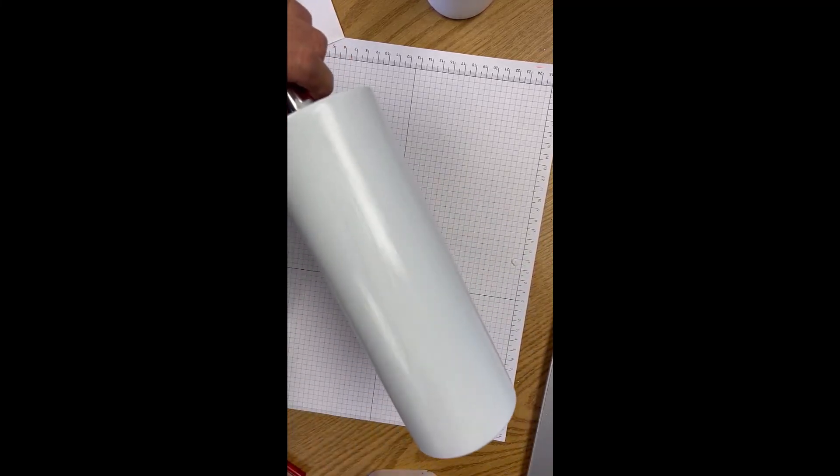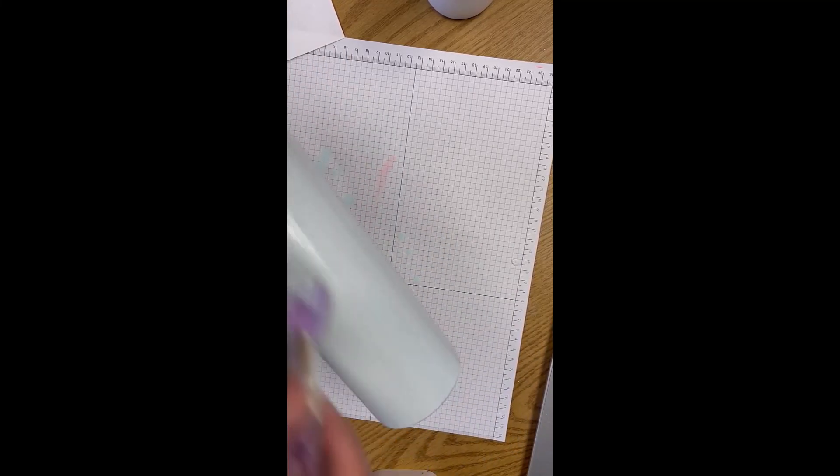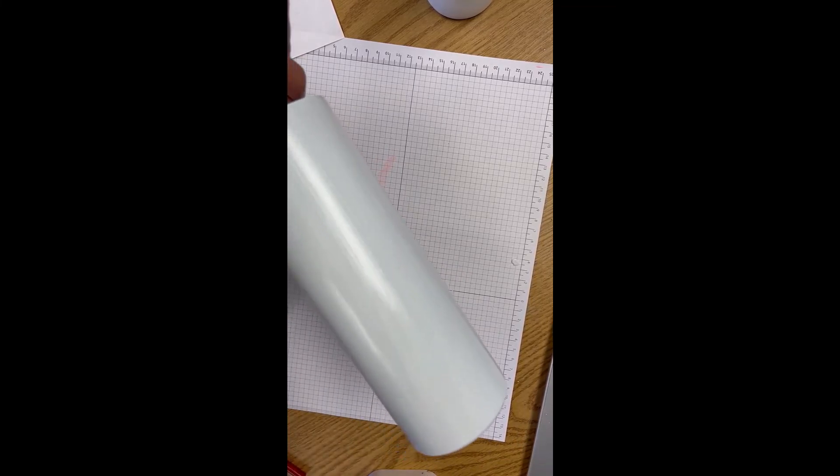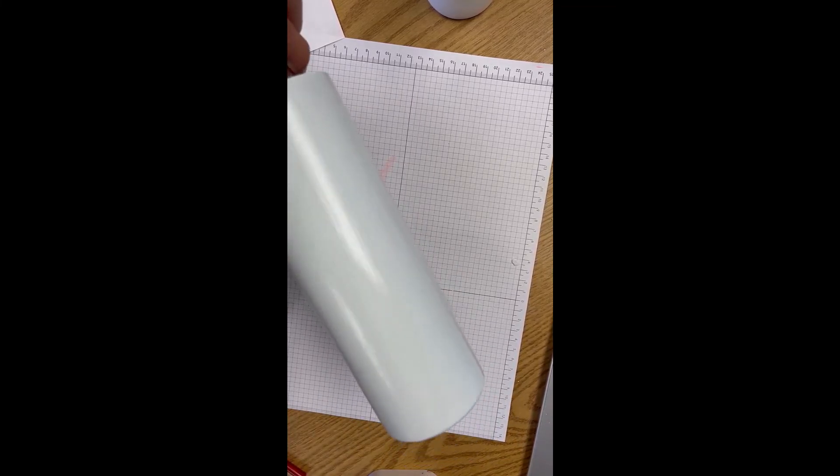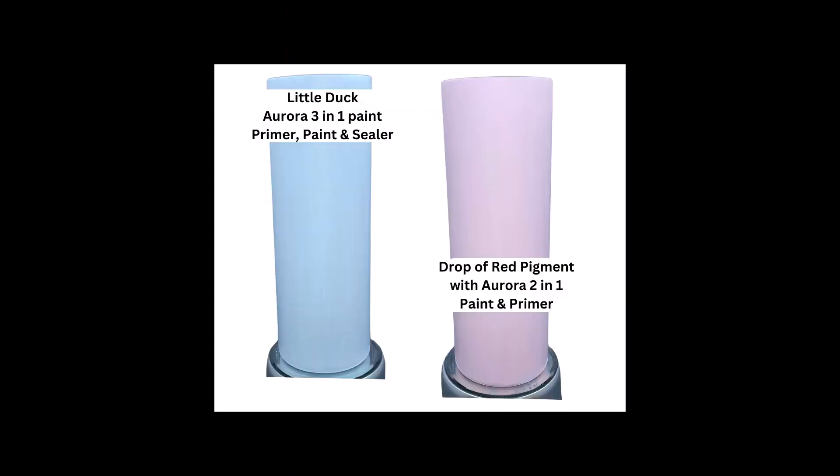There we go, so I think that will do it and we'll let that dry. So those are our two tumblers that are fully coated. We will let them dry and then we will move on to do something else with them in another video. Thank you so much for watching.